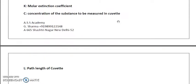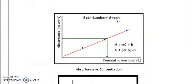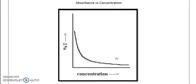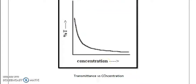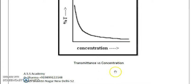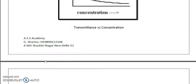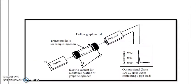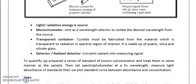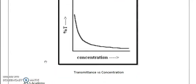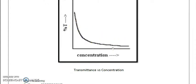If we plot absorbance vs. concentration, we see a straight line — absorbance is directly proportional to concentration. If we plot transmittance on the y-axis against concentration on the x-axis, we get a rectangular hyperbola — transmittance and concentration are inversely related. With increasing concentration, absorbance increases linearly and transmittance decreases exponentially.